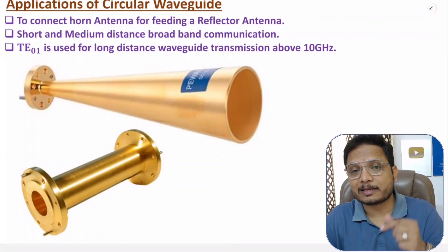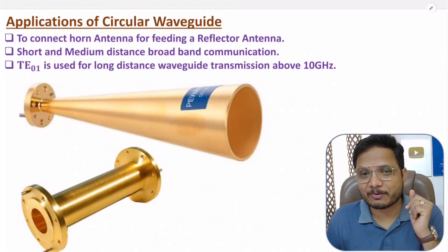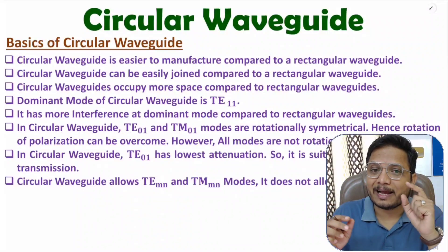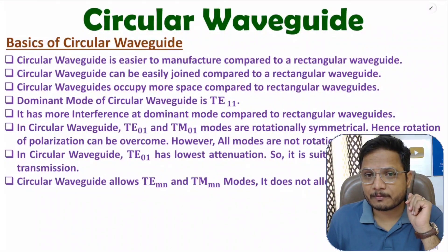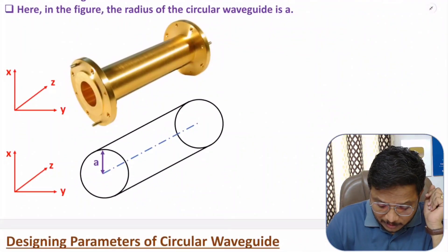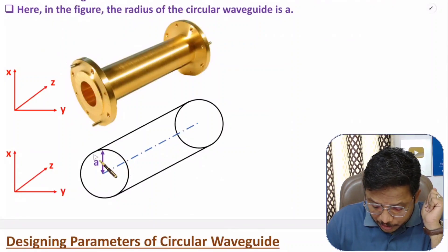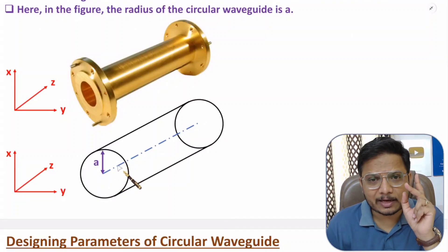Let us begin with the first agenda — basics of circular waveguide. A circular waveguide is a hollow metallic tube having a uniform circular cross section. If you observe the structure, you can see it is a hollow metallic tube with a uniform circular cross section. There are a few basic things to note down.